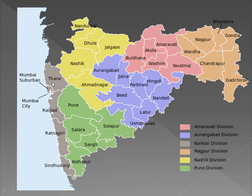Konkan division comprises the districts of Thane, Raigad, Ratnagiri, Sindhudurg, Palghar, and Mumbai.